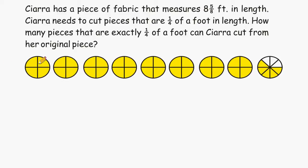Now we should know that we can get exactly four quarters out of one whole. So in this one foot right here we can get four quarters. And we have eight wholes altogether so we can simply take eight and multiply that by four which will give us 32.